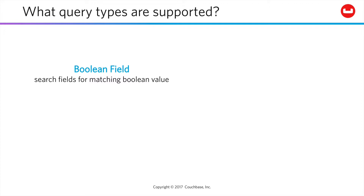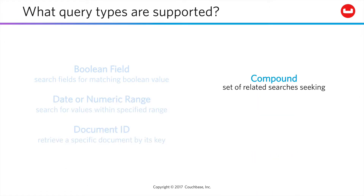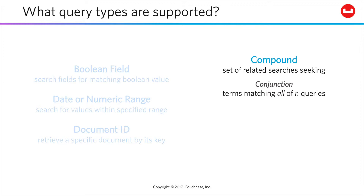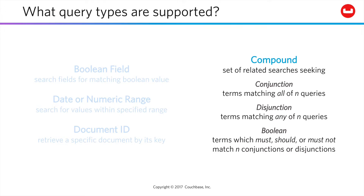Couchbase can search Boolean document fields, search for date or numeric values within specified ranges, and look up documents by a specific ID. All of these approaches can be combined into compound queries — testing conjunctions of terms matching n individual queries, or disjunctions matching one or more of a set of queries, or fully Boolean queries in which terms must, should, or must not match specified conjunction or disjunction queries.